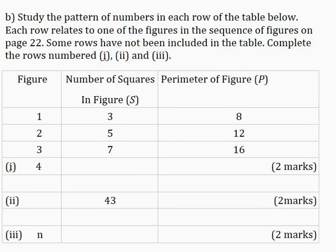Part B: Study the pattern of numbers in each row of the table below. Each row relates to one of the figures in the sequence of figures on page 22. Some rows have not been included in the table. Complete the rows numbered 1, 2, and 3. The first thing I'm going to do here is to check and see if there's a common difference in the number of squares in the figure S and the perimeter of the figure P.